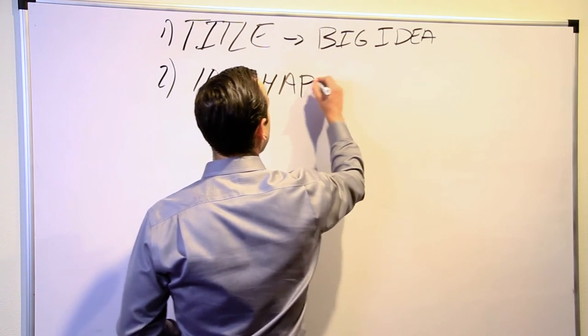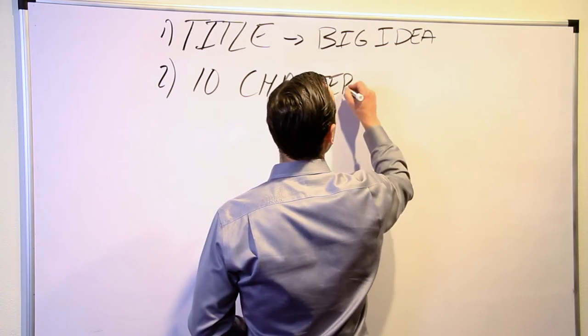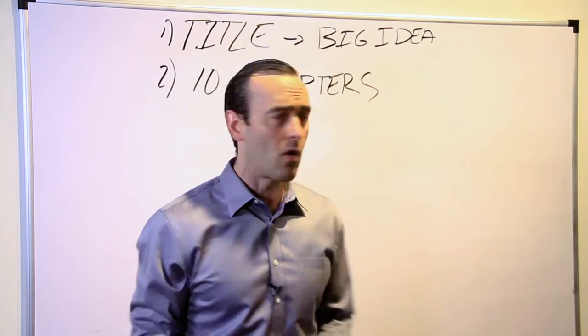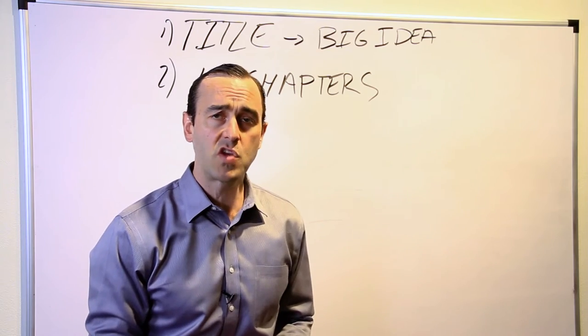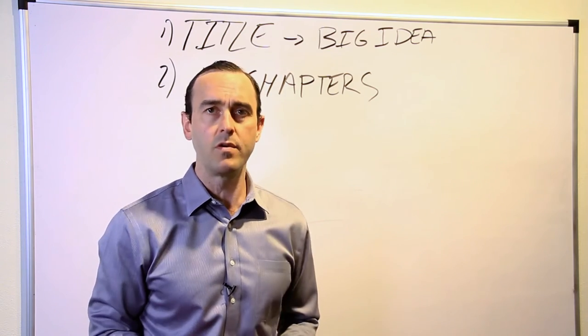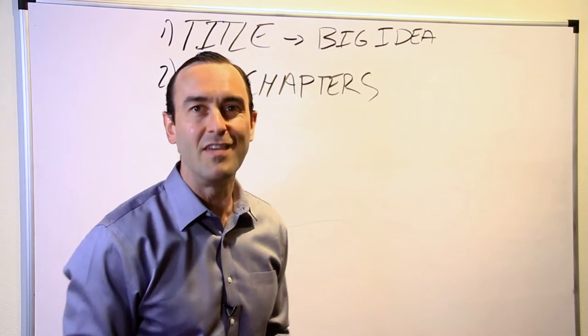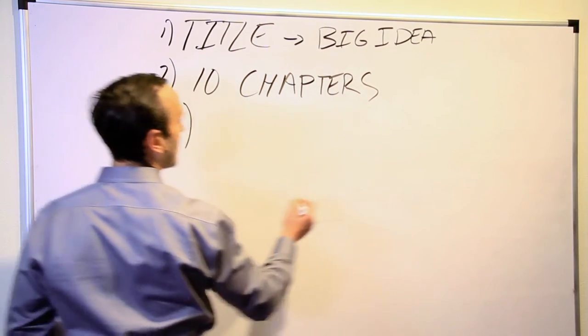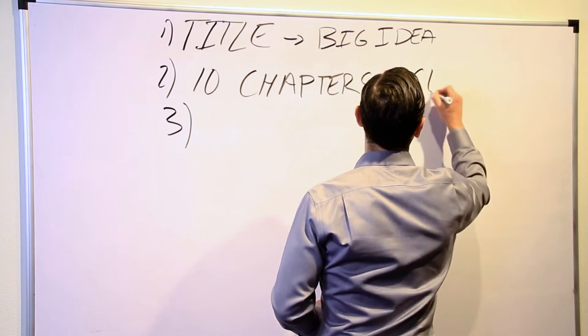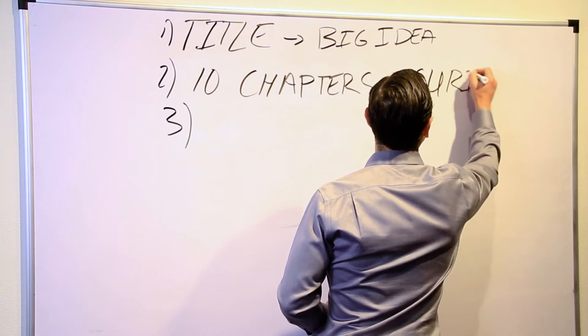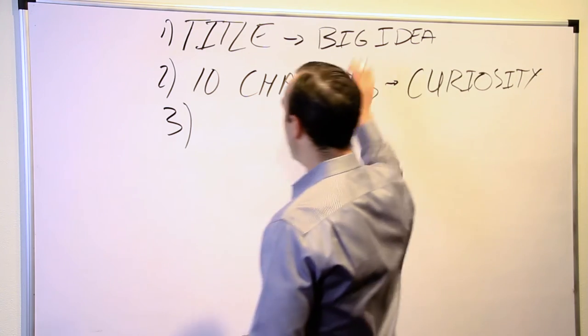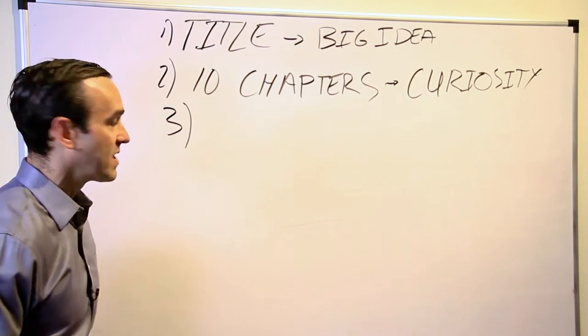Again, curiosity evoking. So that if someone just reads your title or table of contents, they're going to go, hey, wow, these titles for these chapters are really interesting. They're going to flip through. They're going to go, okay, I may as well go and buy this book. So 10 chapter titles. Really with, let's make sure we don't forget this, curiosity. Curiosity is key in not only your big idea, but also in your 10 chapter titles.